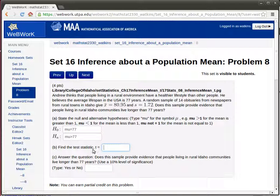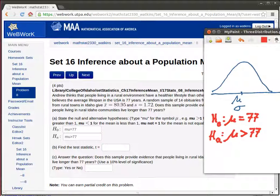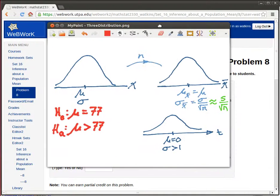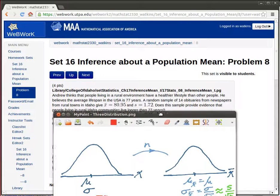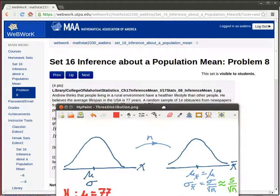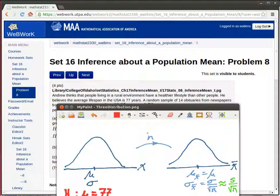Now the next thing that they wanted us to do is find a test statistic. So let's look at where that test statistic comes from. He took a sample, remember, he took this sample of 14 obituaries. So he's able to look at those obituaries and find out how old the people were when they died.